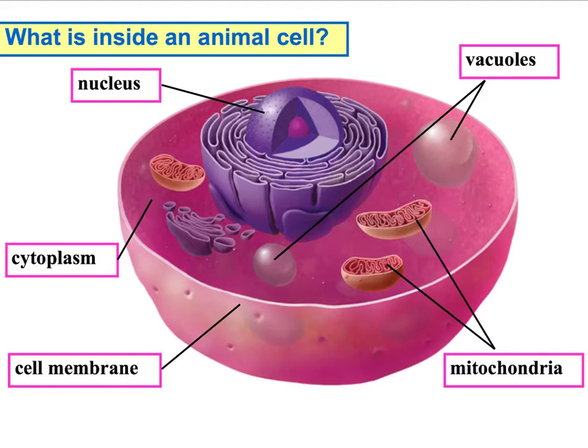This is the animal cell. The first organelle is the cell membrane. If you imagine water in a cup, the plastic part of the cup itself is like the cell membrane — that's the outside layer of the cell. It gives it its shape, keeps everything in control, and tells what can go in and out. Nothing is able to enter or leave unless it goes through the cell membrane.